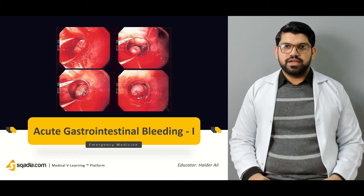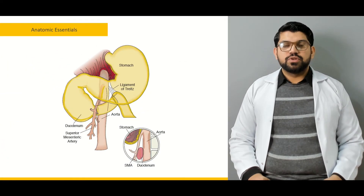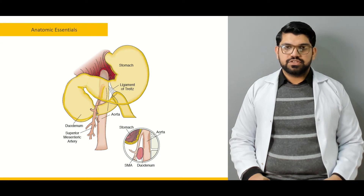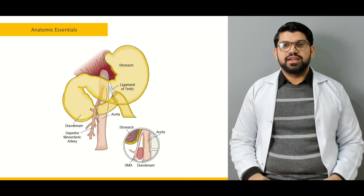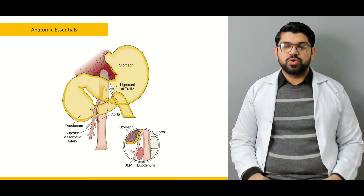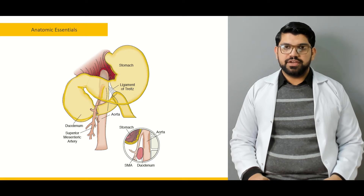Let's go to the outline. First we'll talk about the anatomic essentials. The key differentiating point in anatomic essentials will help differentiate a patient presenting with GI bleed — whether the bleeding is from the upper GI tract or lower GI tract, and what structure marks that distinction.